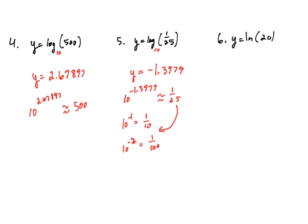For number 6, we type in ln of 20 into the calculator and get approximately 2.9957. Since ln is the same as log base e, this means e to the 2.9957 is about equal to 20.